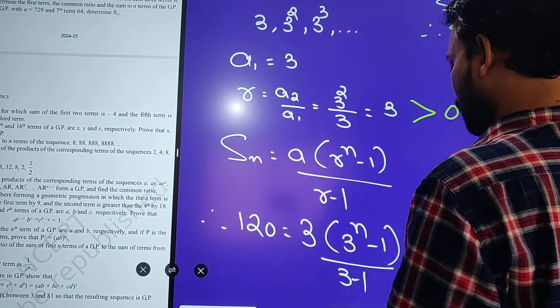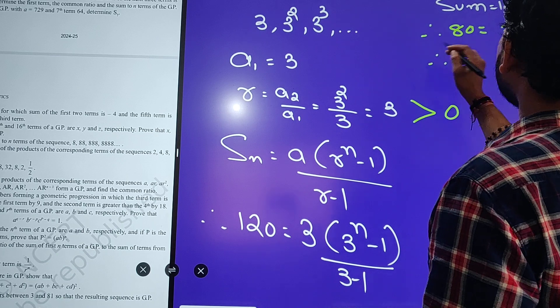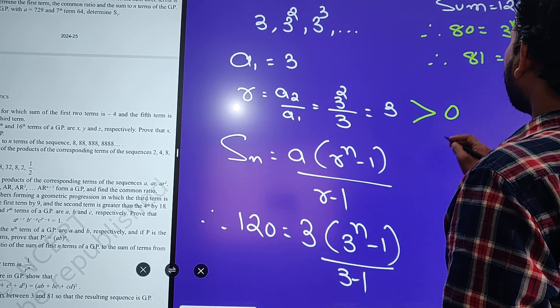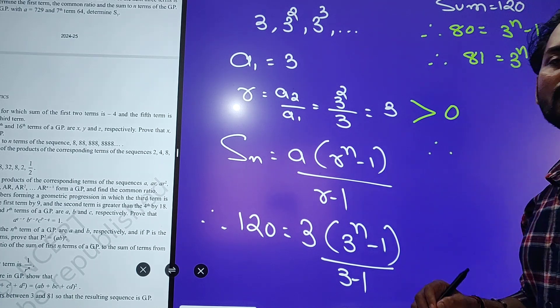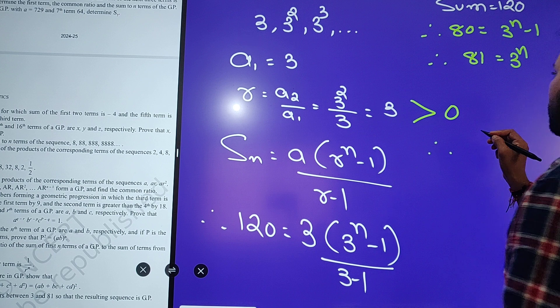80 is equals to 3 raise to n minus 1. Yeh yaha a jayega, toh 81 is equals to 3 raise to n. Again, 81 ke factors nika lo. 3 ka cube ho ta hai 27, or 4 ho jayega. 3 raise to 4. Yes.